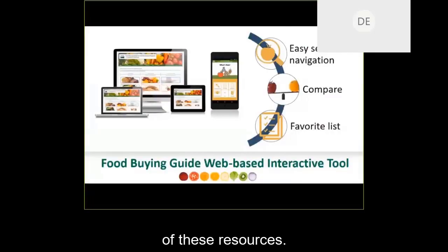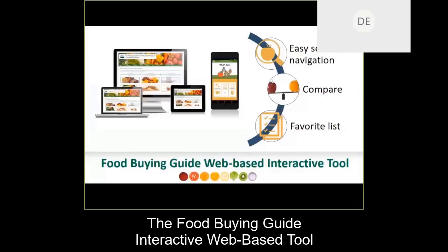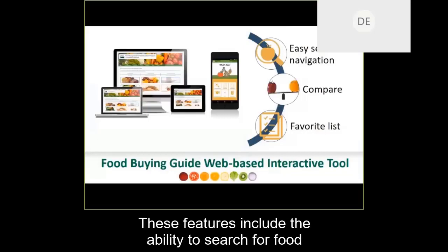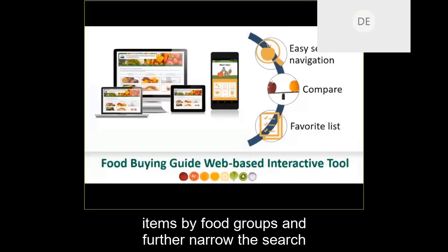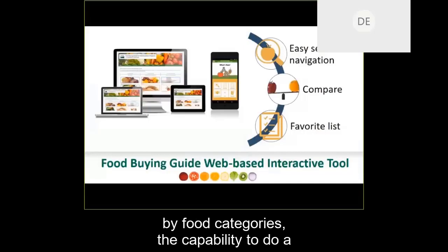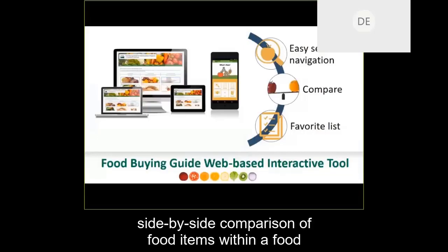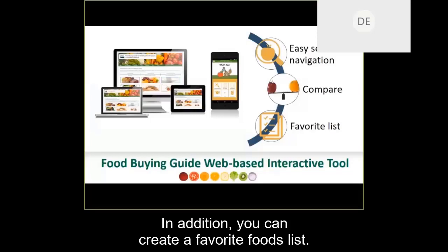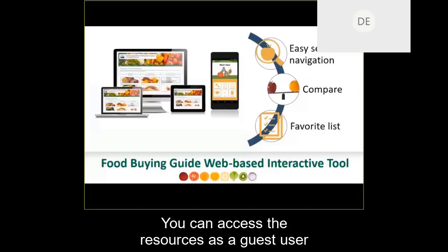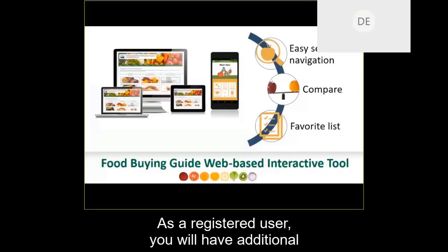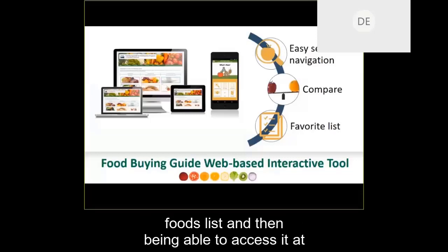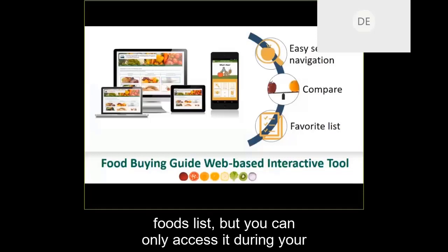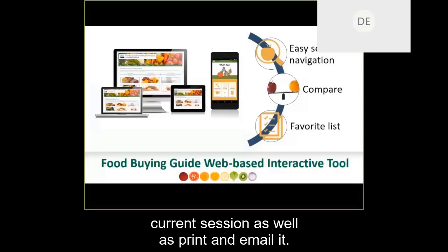Let's review the main features of these resources. Both the Food Buying Guide interactive web-based tool and the Food Buying Guide mobile app include features available to guest users and registered users. These include the ability to search for food items by food groups and further narrow the search by food categories, the capability to do a side-by-side comparison of food items within a food category, such as comparing diced canned carrots to diced fresh carrots. You can also create a favorite foods list. As a registered user, you can save your favorites list and access it later, while as a guest user, you can only access it during your current session, as well as print and email it.